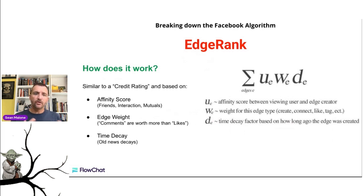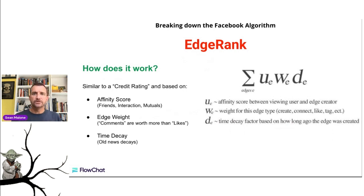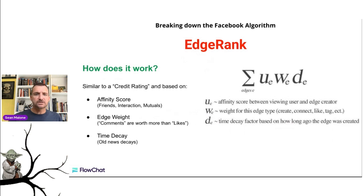Lastly is time decay. We have to remember that old news decays. New news turns to old news, and old news dies. This is how the algorithm has been set up from the beginning — it's not my rules, it's just what Facebook put together. So it's important for you to understand those things.